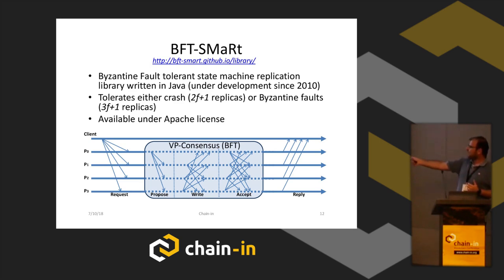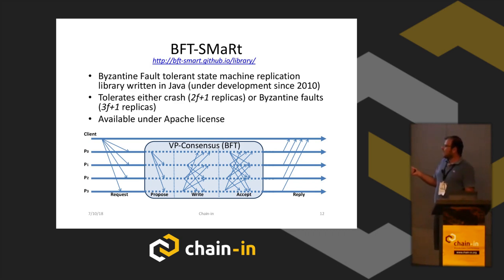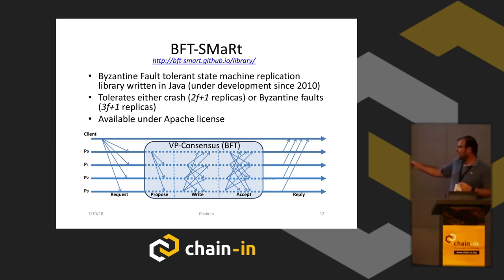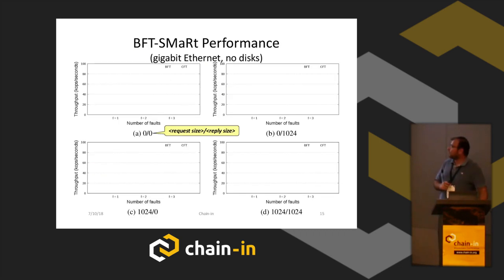The protocol is not very scalable — for four, seven, or ten replicas it works, but if you imagine 6,000 replicas like in Bitcoin, it will not work at all. The basic idea is that there is always a leader. The leader proposes the order of transactions, and the other replicas confirm that what the leader is proposing makes sense — that the leader is not trying to fool the other nodes. Let's look at the performance.